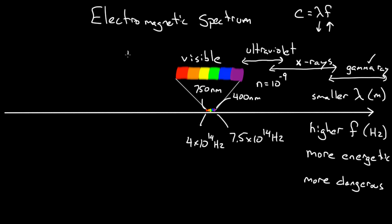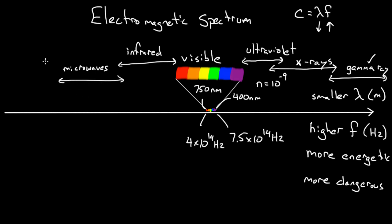Below the visible spectrum, you have infrared light, which is below red and also invisible. Below that, you have microwaves, which are useful for many things: cell phone signals and TV signals sent through the air are in the microwave region. And below microwaves, you have radio waves. Technically, FM radio is more in the microwave region, while AM radio is at lower frequencies — when radio was first developed, those lower AM frequencies were used. So the electromagnetic spectrum is vast, the visible range is just a small part of it, and the rest is extremely useful and in some cases very dangerous.